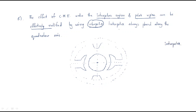The interpoles are always placed along the quadrature axis. To understand this, consider an example with a north pole and a south pole arrangement.